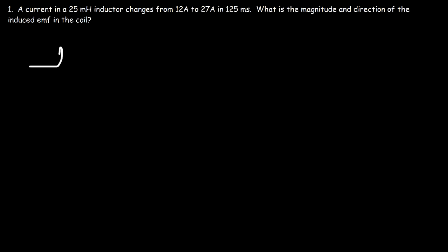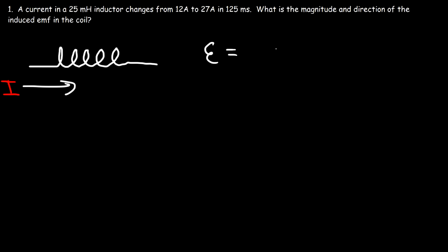This is the electrical symbol for an inductor, and we have a current that passes through it. We need to find the magnitude and direction of the induced EMF in the coil. The formula we need is: the induced EMF equals negative L times the change in current divided by the change in time.